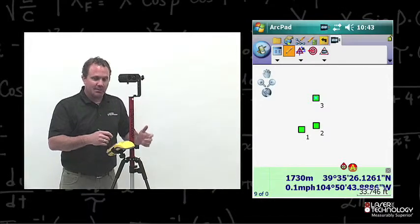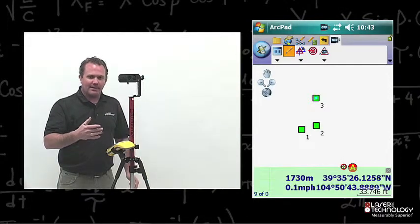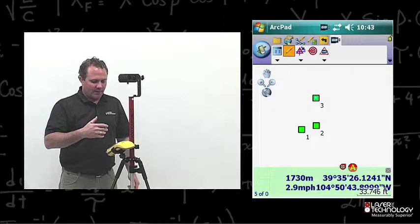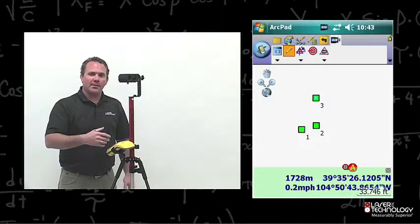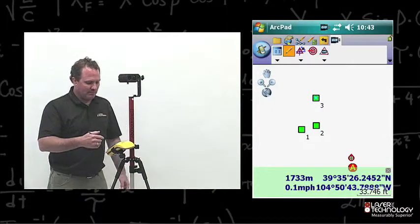We're back at the map screen. I just positioned tree number three. At this time, I'm going to take a height measurement. I want that height measurement to auto-populate into point number three's attributes.